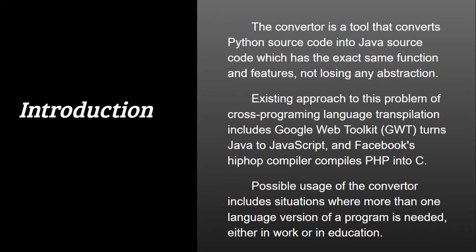The converter is a tool we built to convert Python code into Java source code with the exact same functional features, not losing any abstraction. Existing approaches to cross-programming language transpilation include Google's Web Toolkit (GWT), which compiles Java to JavaScript, and Facebook's Hip Hop compiler, which compiles PHP into C. Our compiler is in the same direction as those approaches. Possible uses include situations where more than one language version of a program is needed — in work or education — so that learners who know one language can use this converter to aid their study of the other.